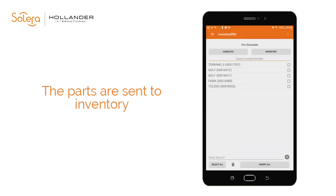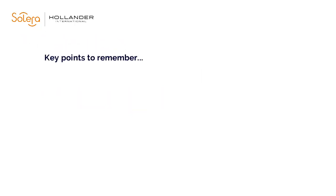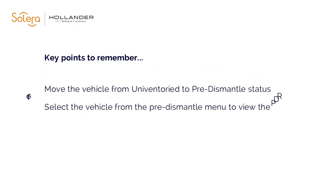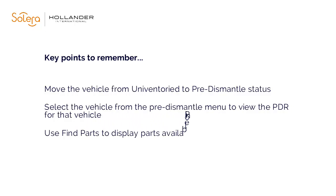In summary: move the vehicle from Uninventoryed to Pre-Dismantled status. Select the vehicle from the Pre-Dismantled menu to view the PDR for that vehicle and add parts to inventory. Use the Find Parts button to view parts of that type already listed in PINNET.